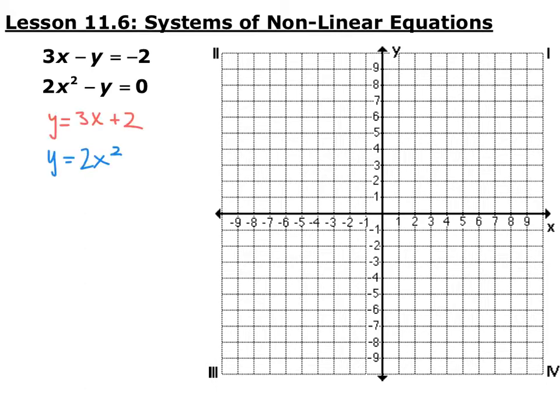So first we're going to solve by graphing. Remember when you solve by graphing, you graph the two equations — or maybe more — and find where they intersect. So here we have the line; I solved both of these for y. We have the line y equals 3x plus 2 and the parabola y equals 2x squared.